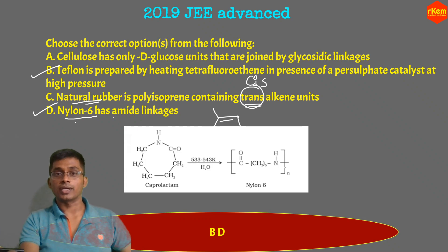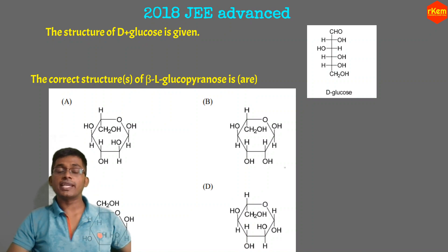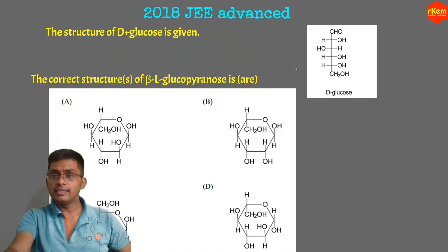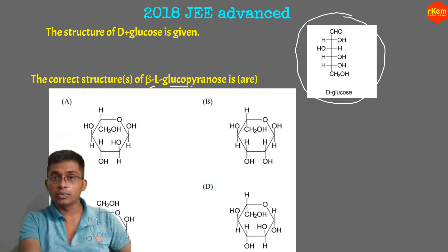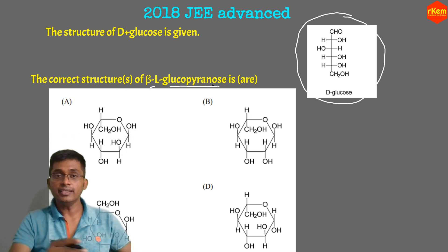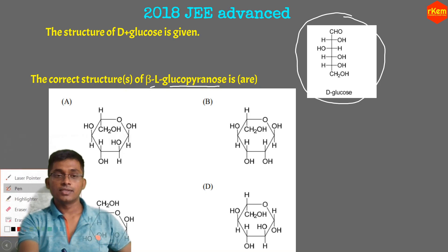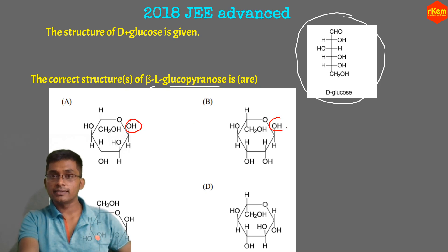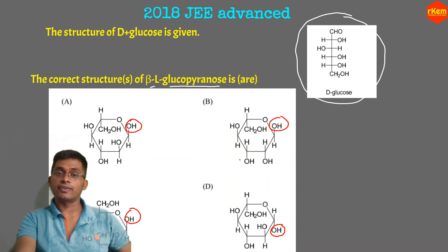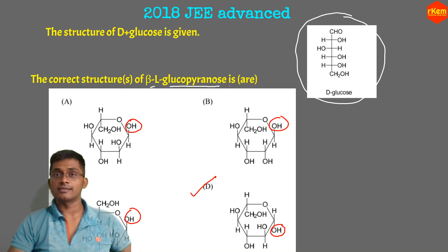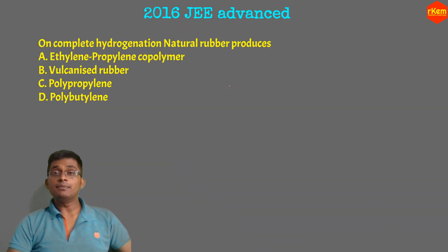Next question from 2018 JEE Advanced — a very simple question. D-glucose structure is given; what is beta-L-glucopyranose? Pyranose is a six-membered ring. To identify beta glucopyranose, look at the OH position at C1 — if OH is down it is beta, if OH is up it is alpha. So the correct answer is option D. You must be thorough with all the structures.